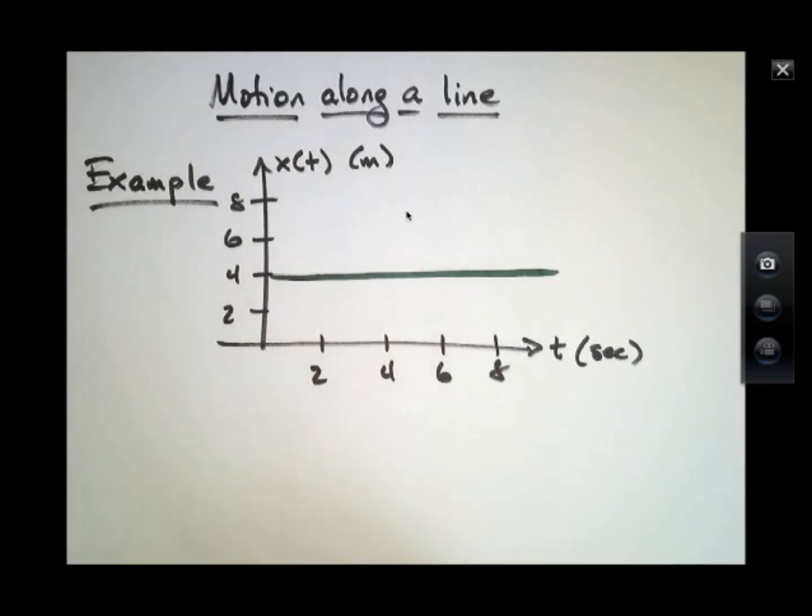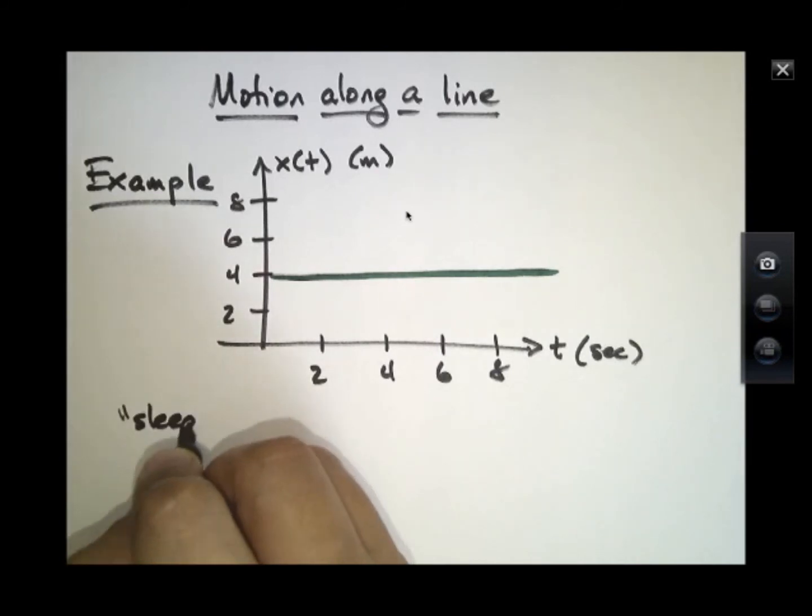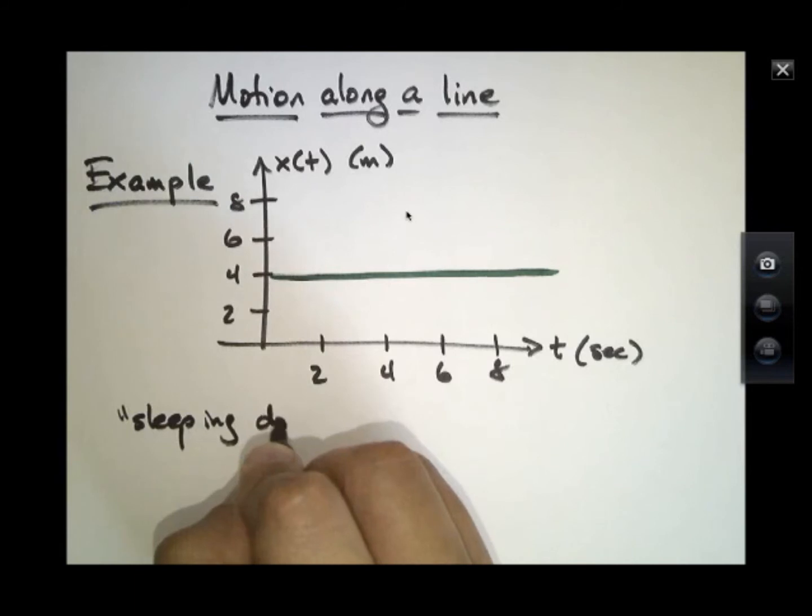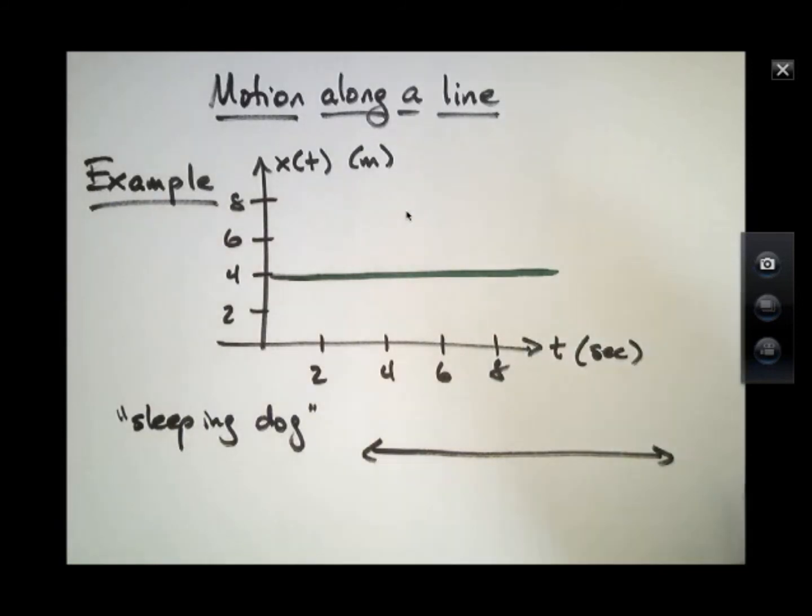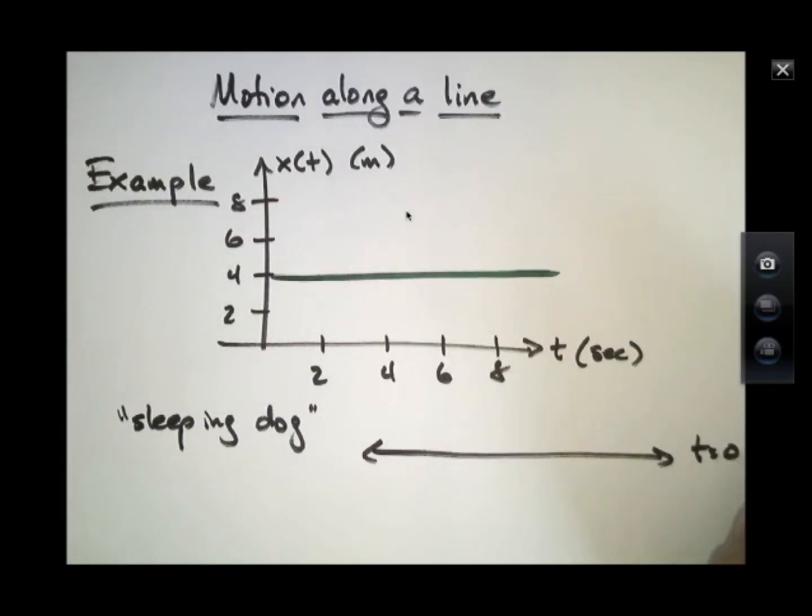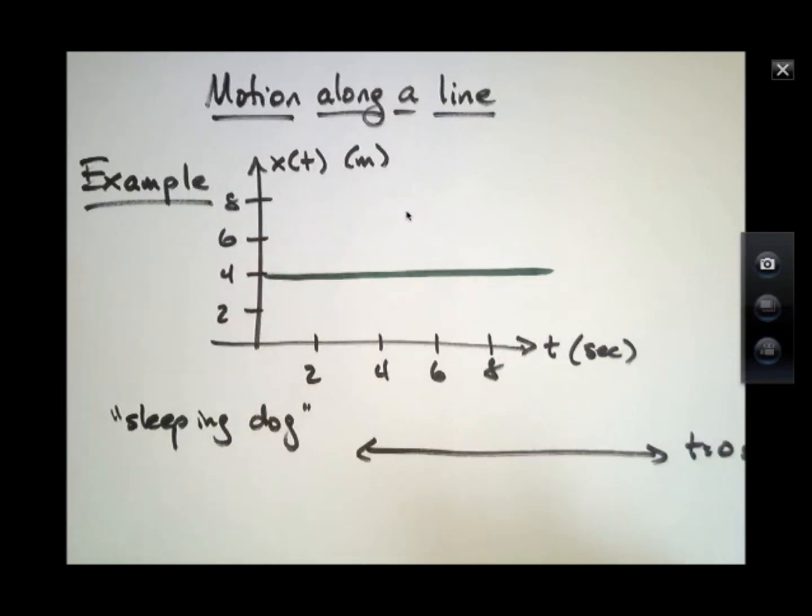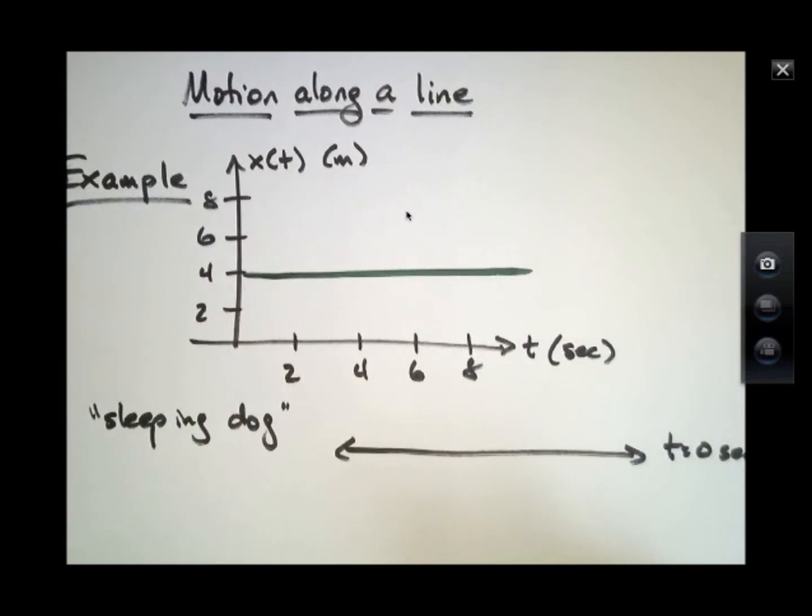So I can call this the sleeping dog example. In other words, if at a certain time, 0 seconds, I have a number line that represents the x-axis.